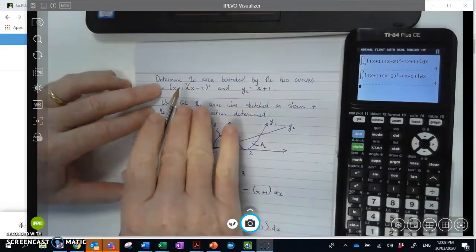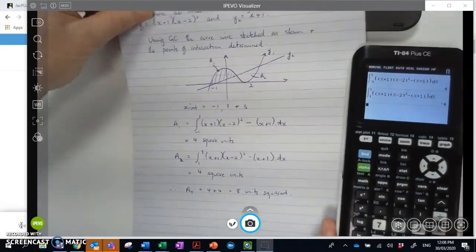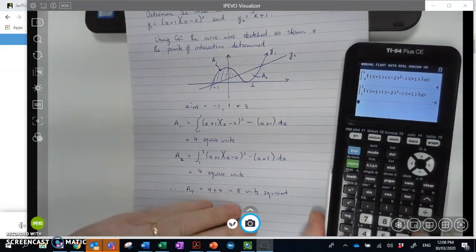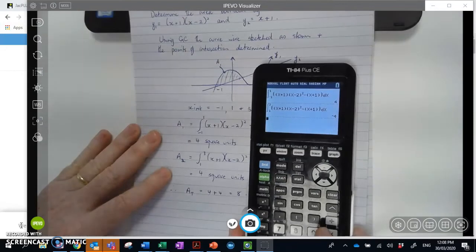OK, remembering that if you ask for an area, we need to give it some units. If the units are not actually articulated in the problem of the question, just call it units squared. Otherwise, it might be meters or centimeters. OK, I hope that's helped.